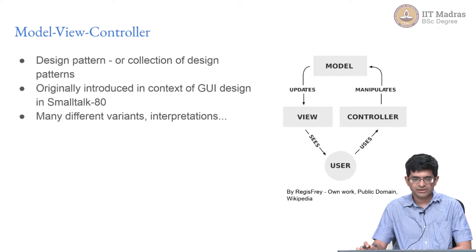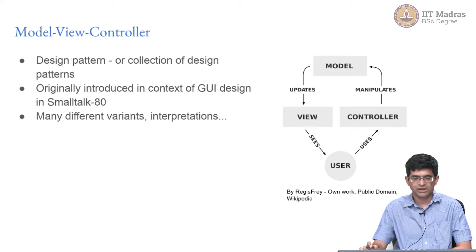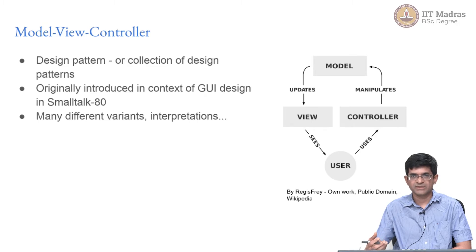One important thing to understand in this discussion of MVC is that it was originally introduced in the context of GUI design — graphical user interface design — in the Smalltalk 80 programming language. As the name suggests, this was developed somewhere around 1980, and it was a heavily object-oriented language, meaning that the whole concept of objects was built into the language right from the start. Because of that, there were certain ways of thinking about the various parts of programs that lent themselves naturally to the context of that language.